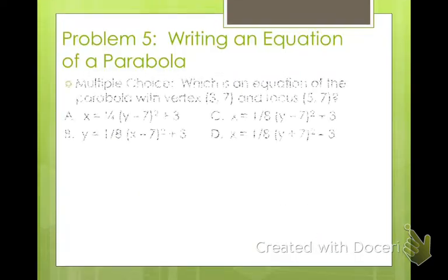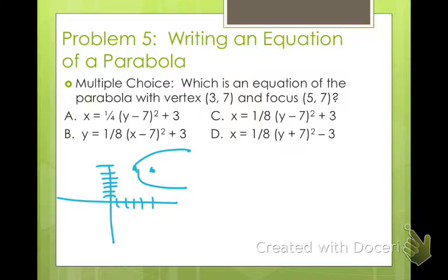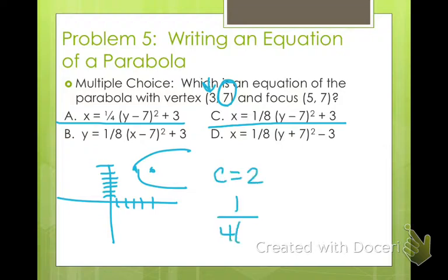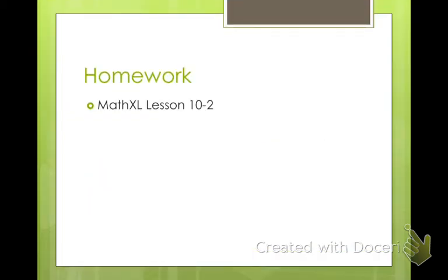What's the equation of the parabola with vertex at (3, 7) and focus at (5, 7)? Since both points have the same y-value, the parabola opens horizontally — this is an x equals form. The focal distance c = 2, so a = 1/(4 times 2) = 1/8. The equation is x = 1/8 (y - 7)² + 3. That's the last example — hope you learned a lot about parabolas. Homework is lesson 10-2.